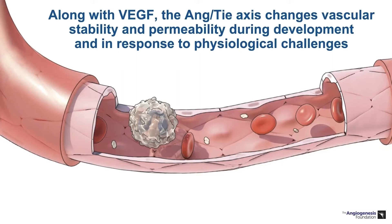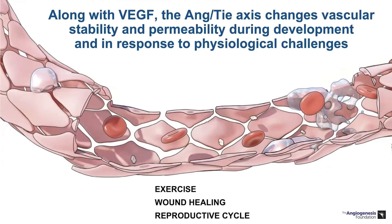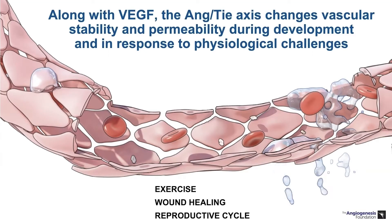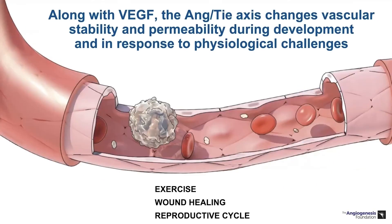This illustration demonstrates what we think of as a normal stabilized vasculature. With physiologic challenges—for example, exercise, wound healing, reproductive cycle—you can see a structured breakdown of the integrity of this vasculature such that you get vascular leakage outside of the normal vascular channels and localized inflammation. But as that physiologic challenge resolves, in most cases the normal vasculature is able to be stabilized again.